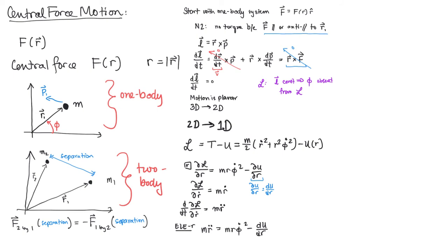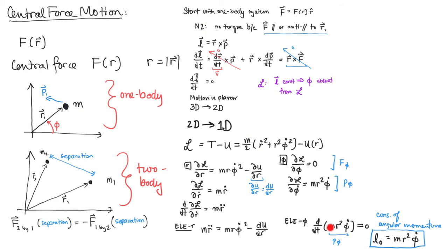We can repeat this process for the phi variable. And when we compute the partial, we see that the Lagrangian does not depend on the angle phi. So the generalized force is zero, therefore the generalized momentum is conserved, and that quantity is the angular momentum. And since this quantity mr squared phi dot is conserved, we'll just give it a name l-naught, meaning the angular momentum. And we'll put the naught in there just to stress and point out that this is a positive quantity.